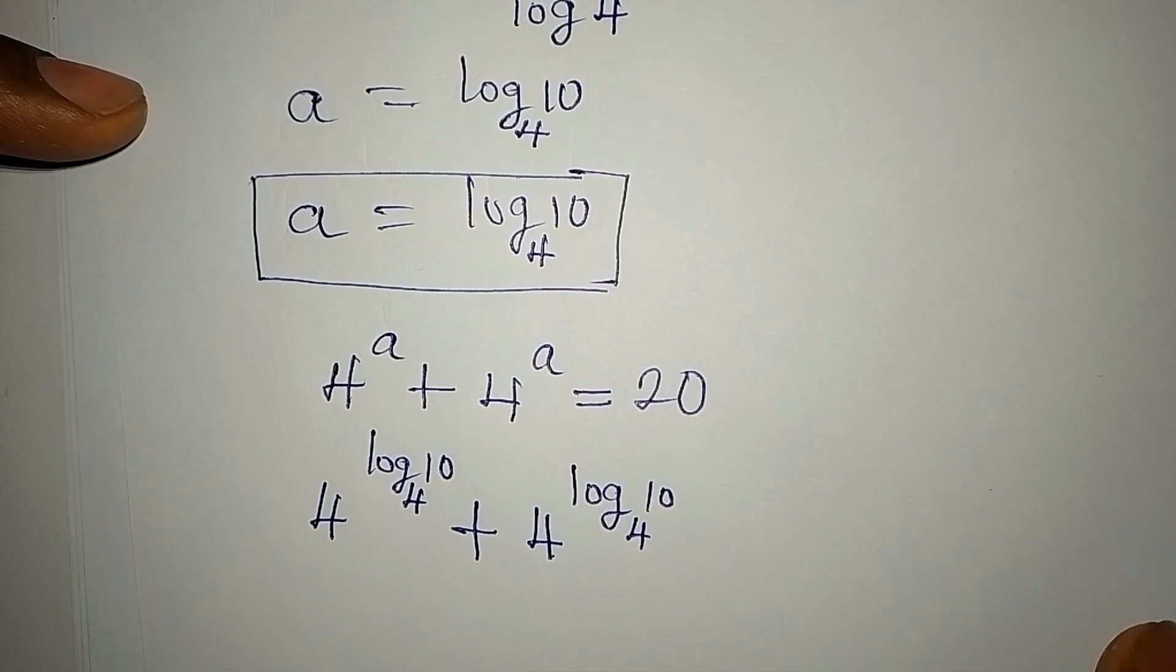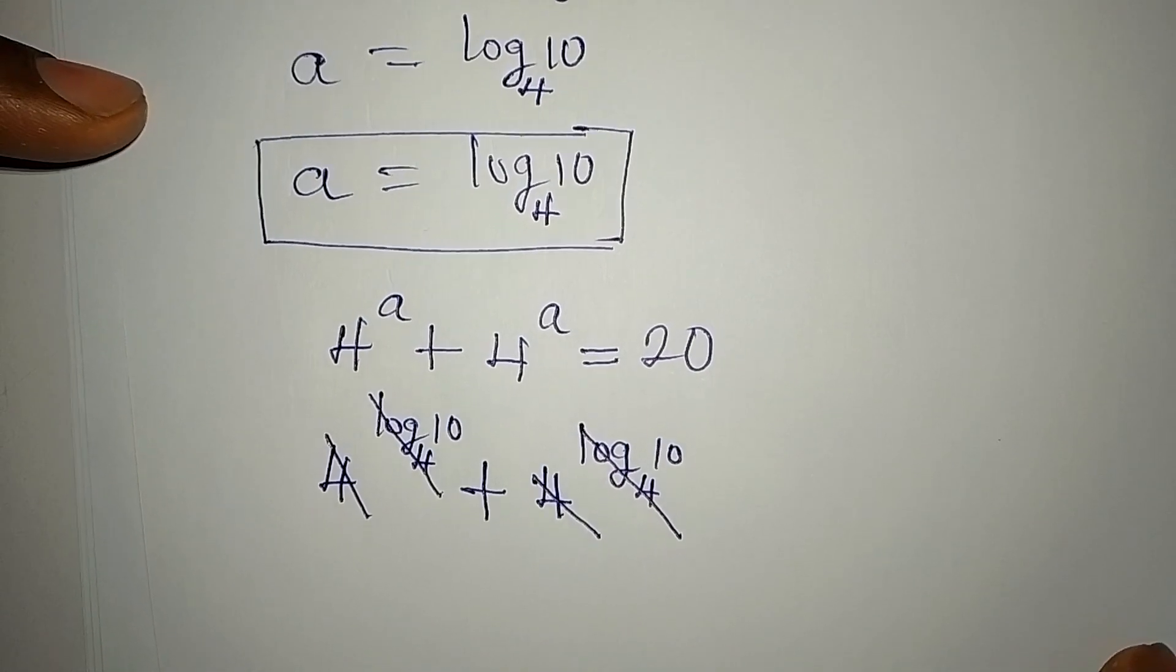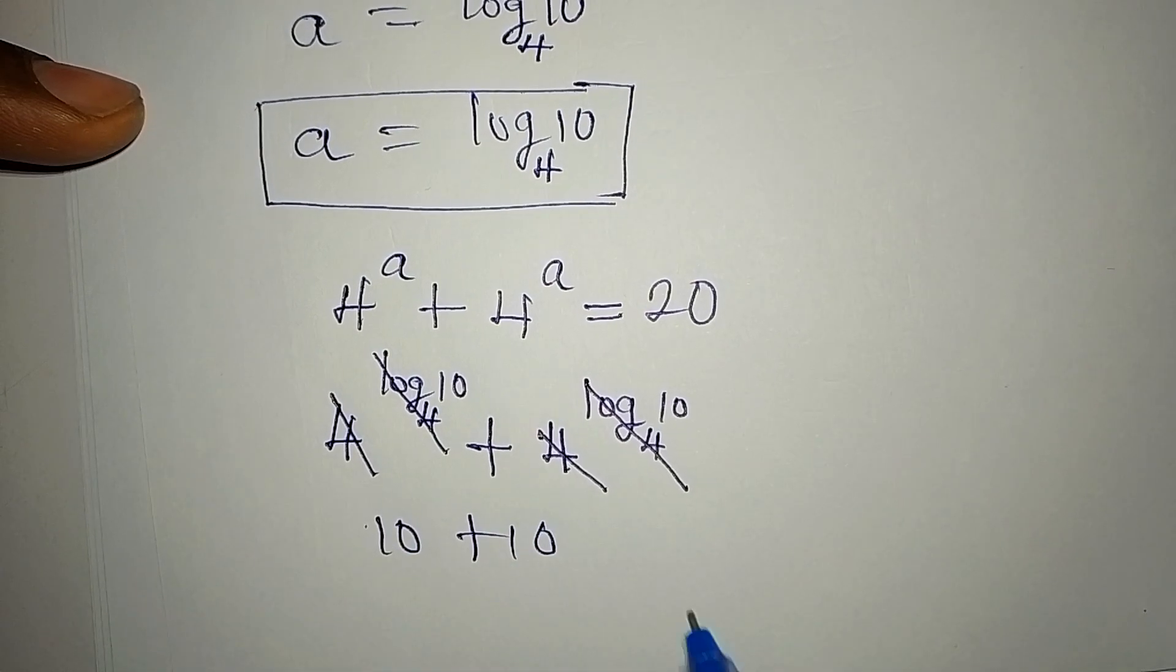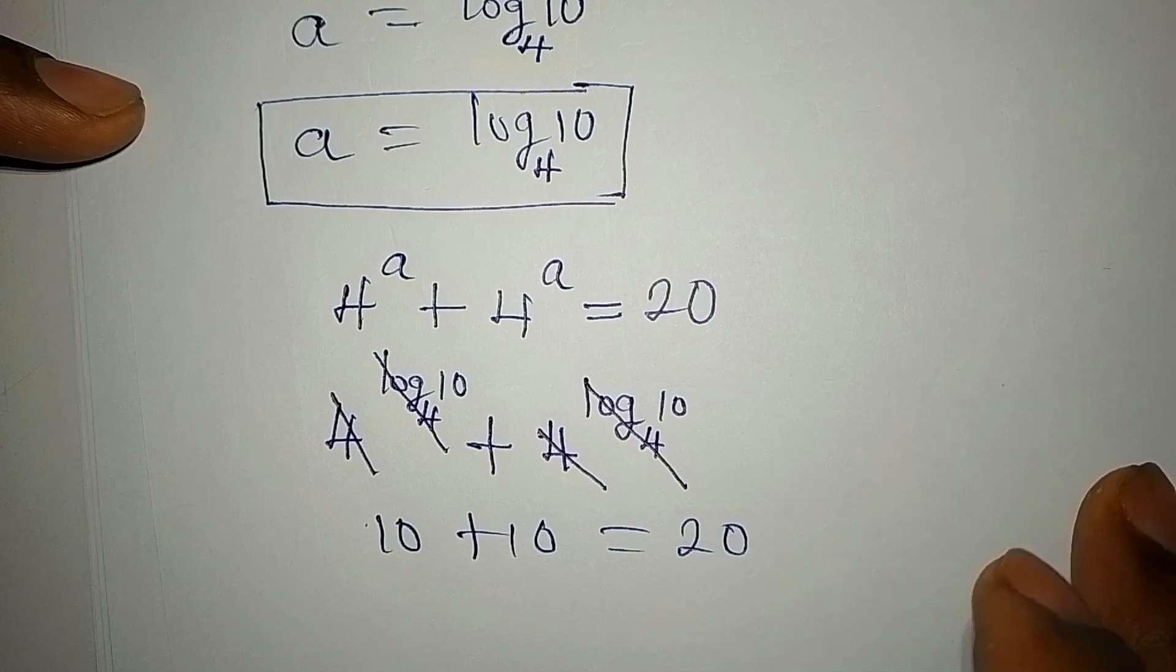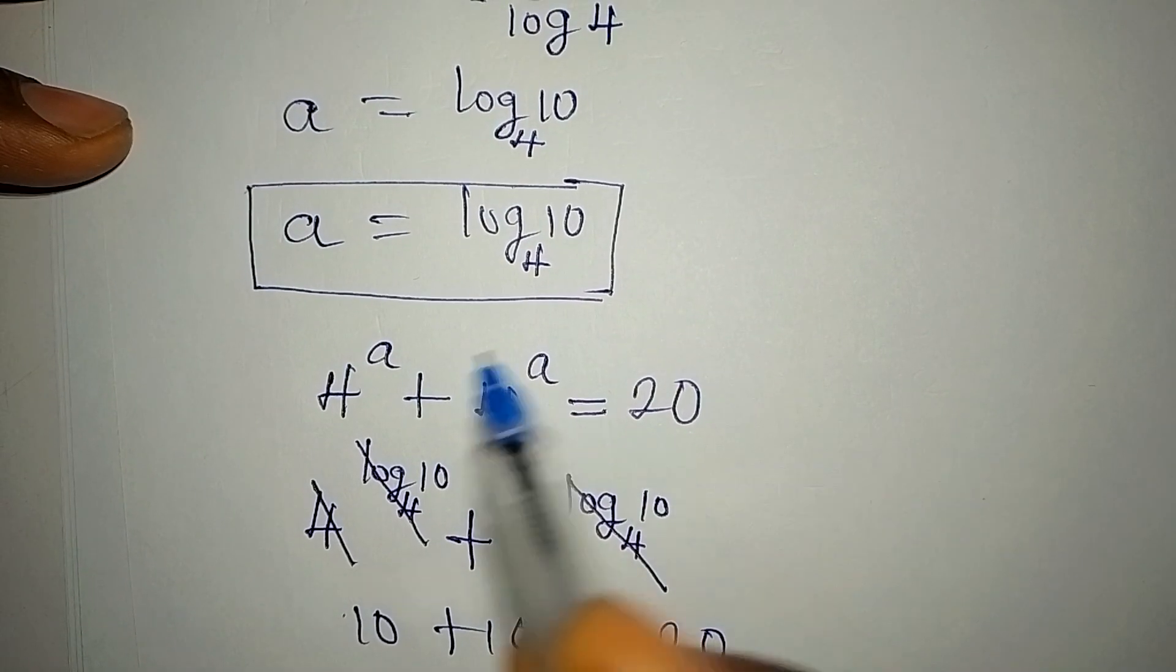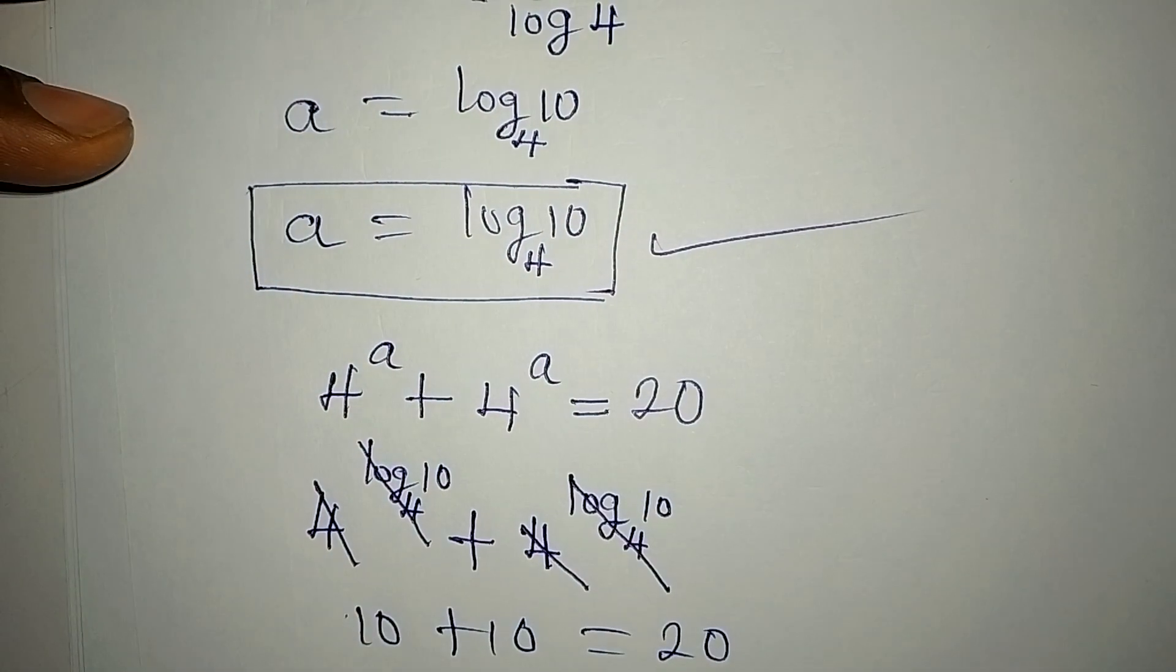And there is a law that says log to base 4 can cancel this 4. And we have 10 plus 10 remaining, and that is 20, which we are looking for. So it confirms that a equals log 10 to base 4 satisfies the equation.